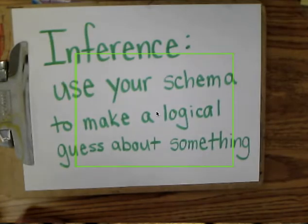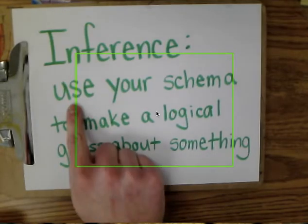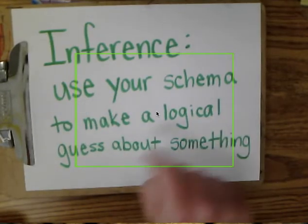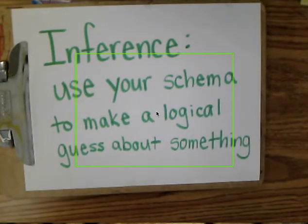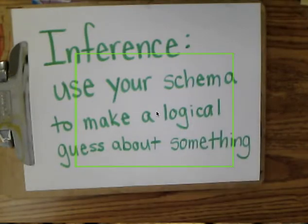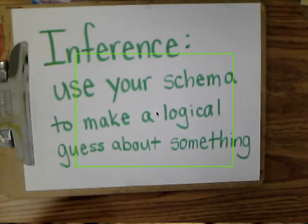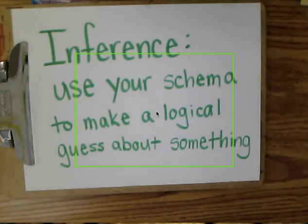When you make an inference, you use your schema to make a logical guess. Schema means your prior knowledge — what you already know and how you think. Then you can make a logical guess by looking at what you can read in the words or what you can figure out about a situation.